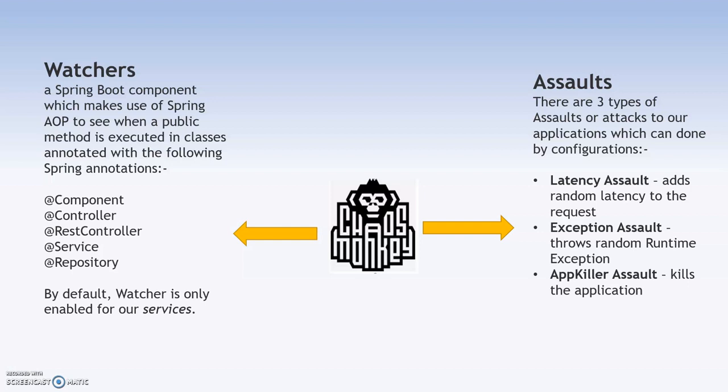There are three types of assaults or attacks that can be done to our application to check whether it is able to withstand such pressures. First is the latency assault, which adds random latency to the request — there would be a range of time within which we check whether our response comes. Second is the exception assault, which throws a random runtime exception. Third is the app killer assault, which kills the application.